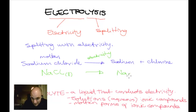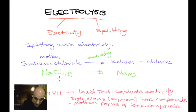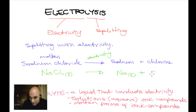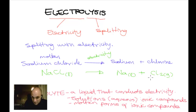We also get chlorine, which is a diatomic gas, written as Cl₂(g). To balance this: we have two chlorine atoms in the chlorine molecule, so we add a 2 in front of Cl₂, which gives us two sodium ions, so we add a 2 in front of Na. That gives us the balanced equation: 2NaCl(l) → 2Na(l) + Cl₂(g).